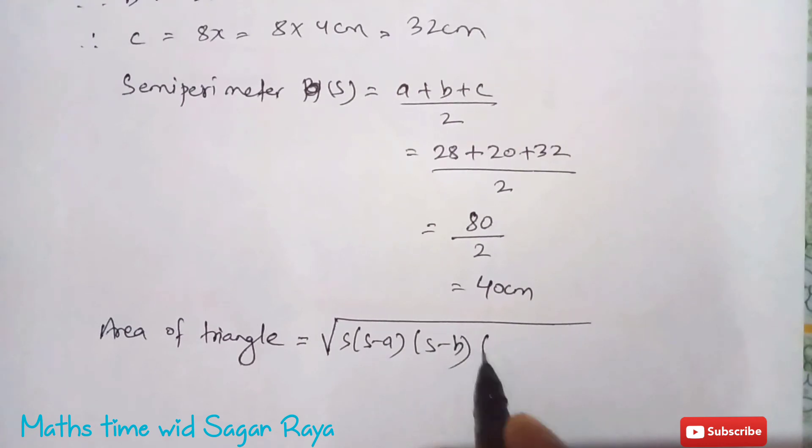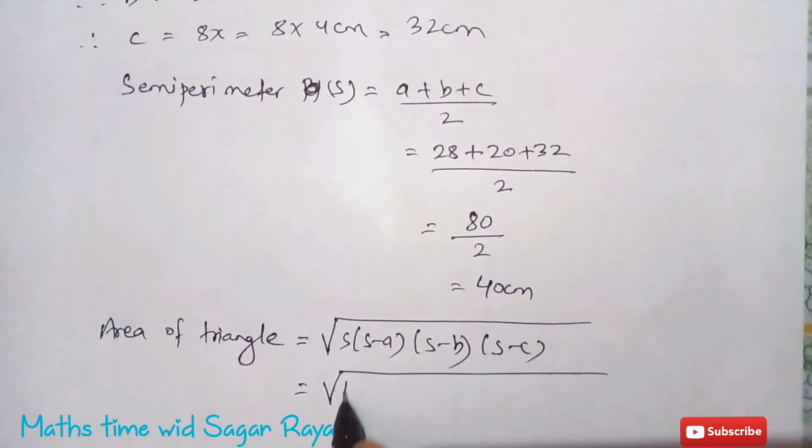So s is 40, 40 minus 28, similarly 40 minus 20, and 40 minus 32.